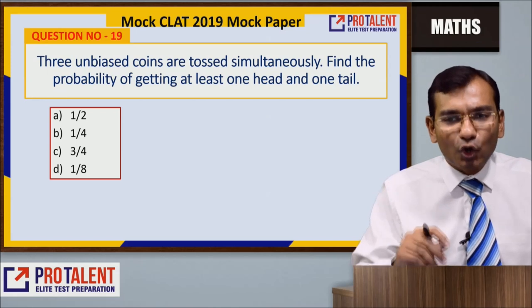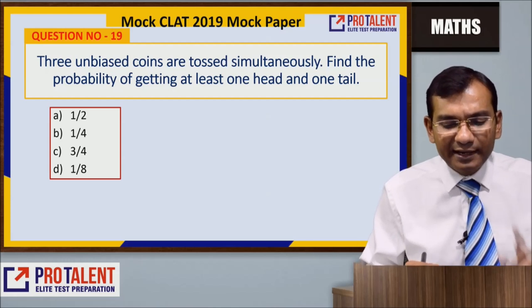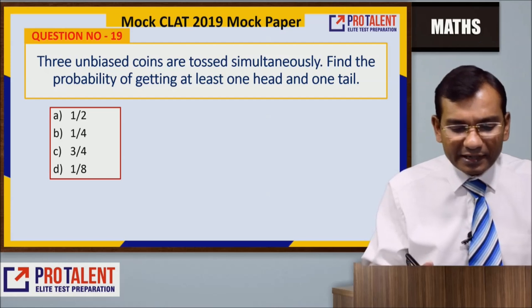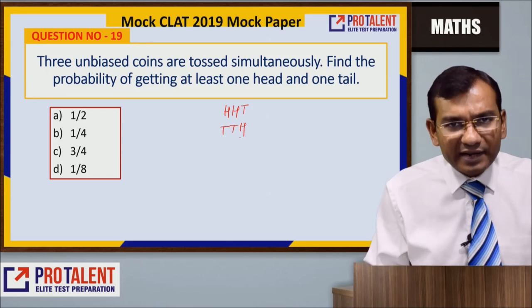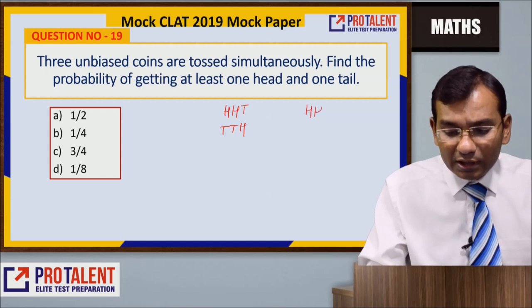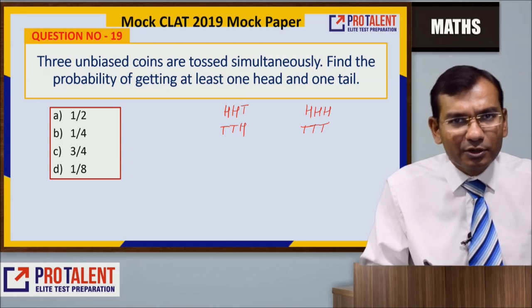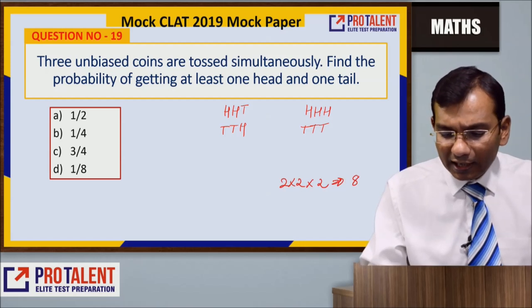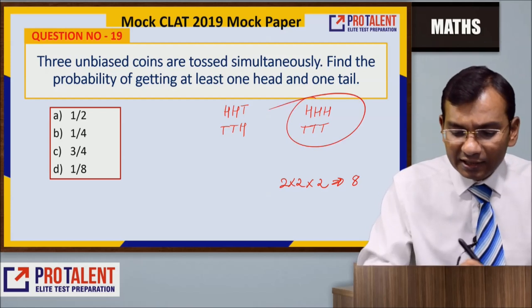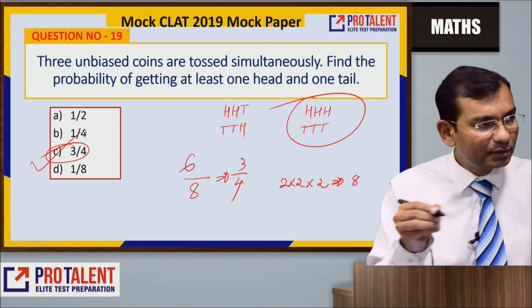Question 19: Three unbiased coins are tossed simultaneously. Find the probability of getting at least one head and one tail. Total outcomes = 2³ = 8. Unfavorable cases: all heads (HHH) and all tails (TTT) — 2 cases. Favorable outcomes = 8 - 2 = 6. Probability = 6/8 = 3/4. That's the faster way to solve it.